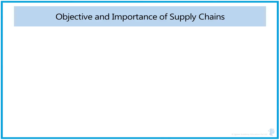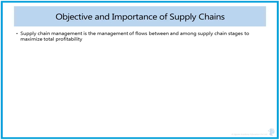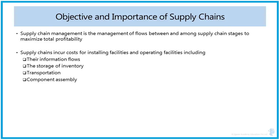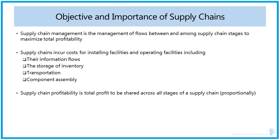The objective and importance of supply chain — what is the need for a supply chain? Supply chain has become an indispensable component of every organization, whether service or manufacturing. It involves the management of flows between various supply chain stages or echelons, with the objective of maximizing total supply chain profitability or surplus. A supply chain incurs costs including facility installation and operation, information flows, inventory storage, transportation, and the assembly of components into a final finished product.